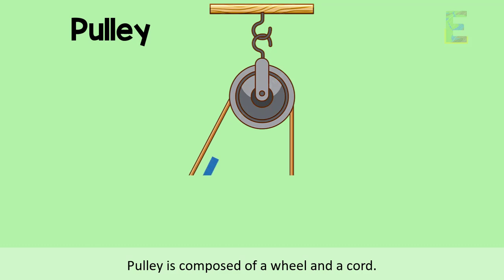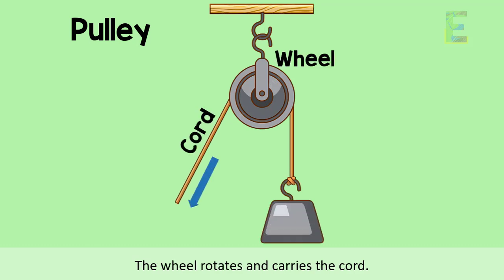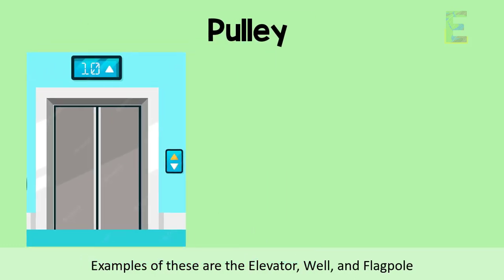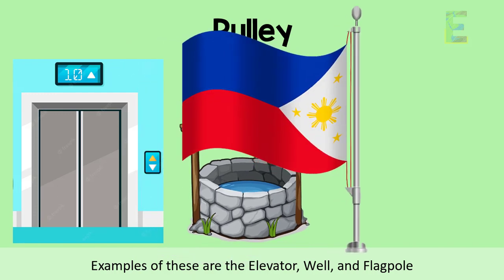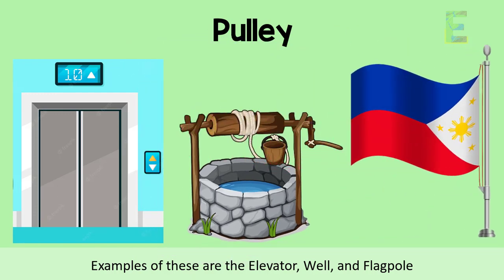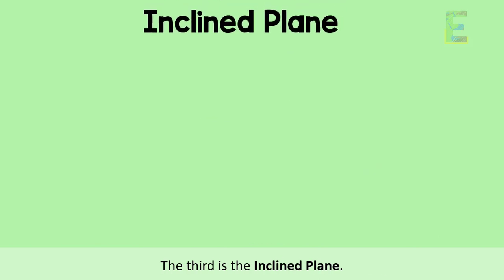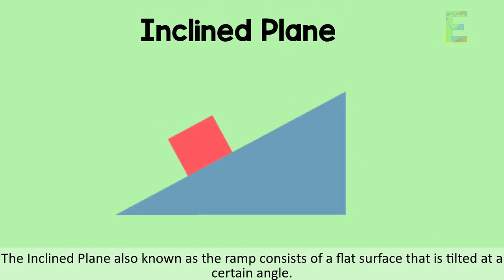Next is the pulley. A pulley is composed of a wheel and a cord. The wheel rotates and carries the cord. Examples of this are the elevator, well, and flagpole.